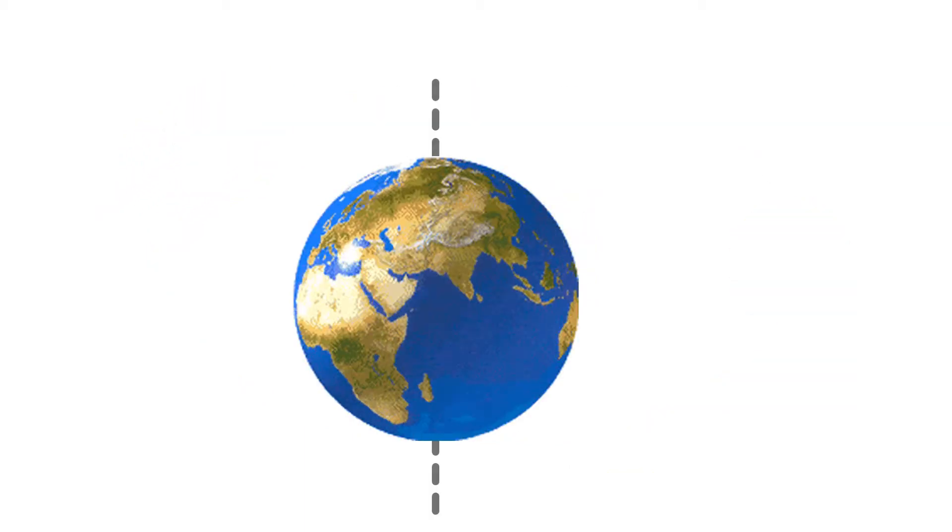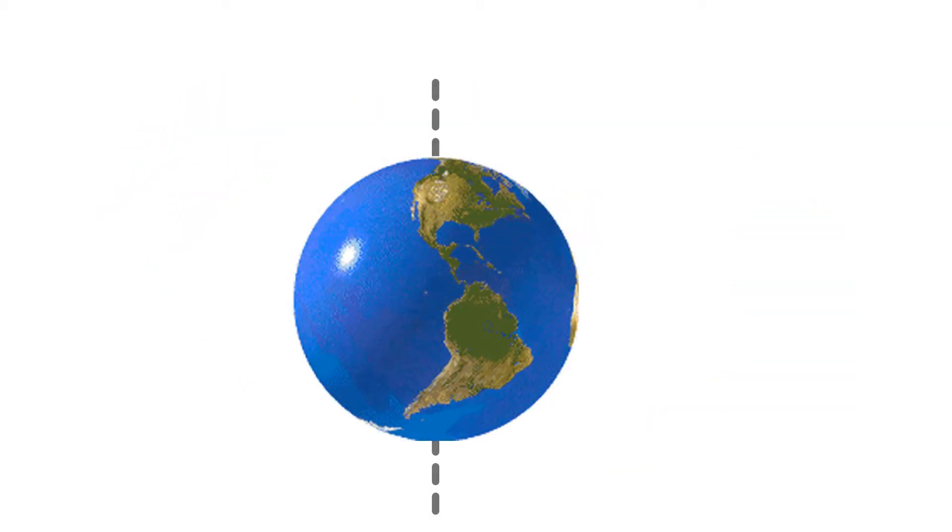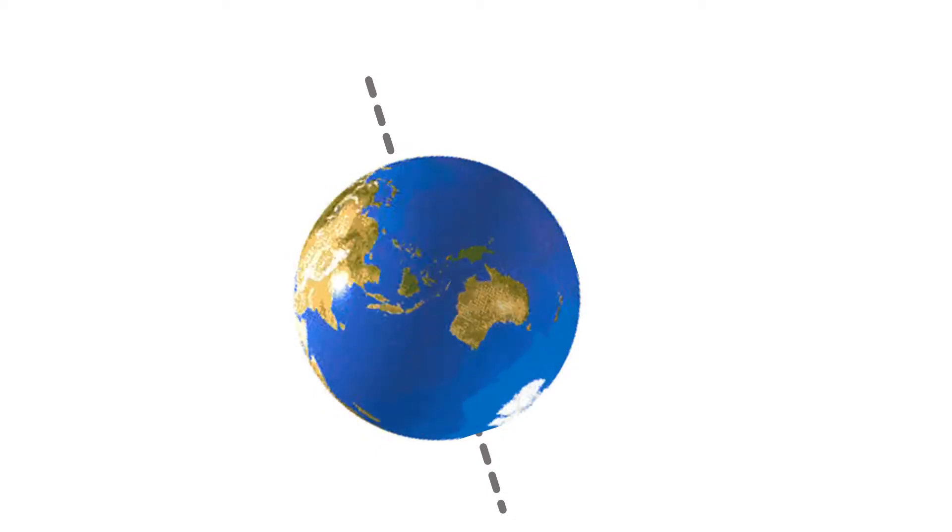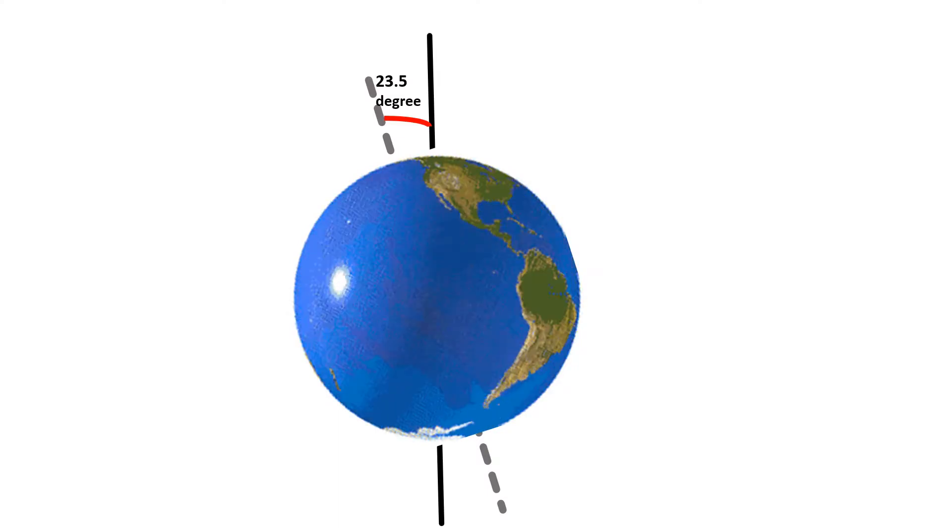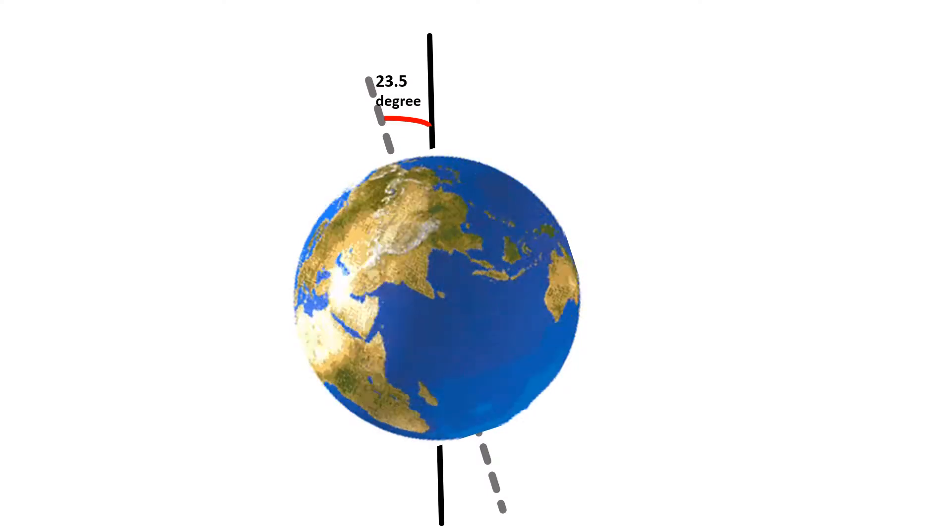The Earth doesn't rotate in a straight manner, but it is slightly tilted. The Earth is tilted 23.5 degrees from its orbital plane with the Sun.